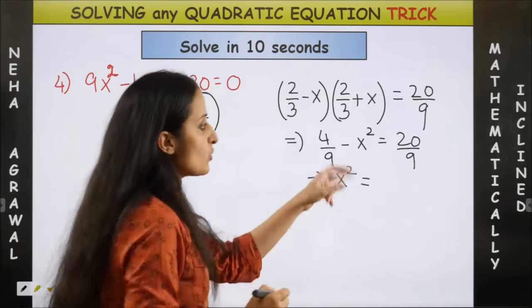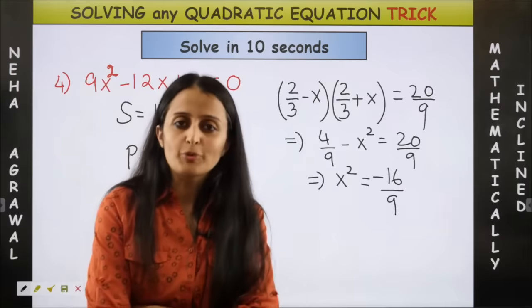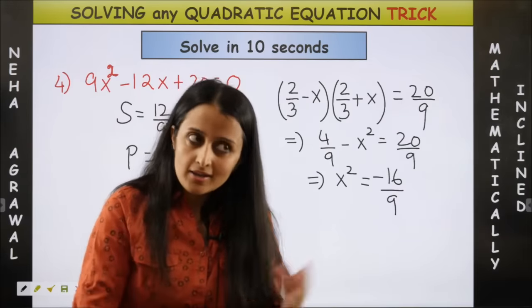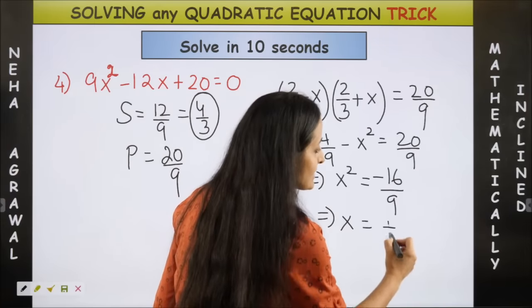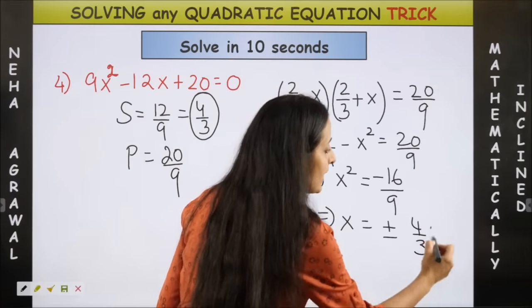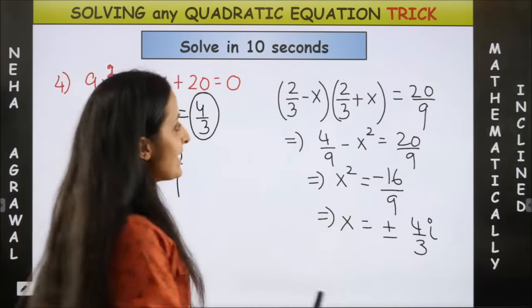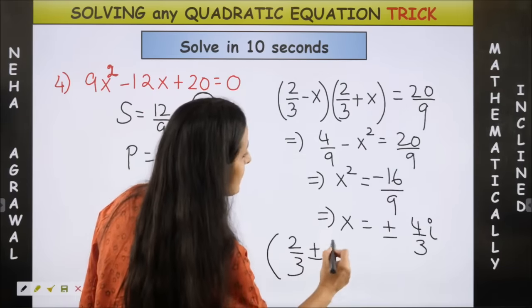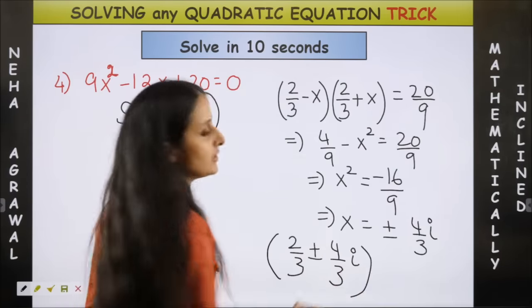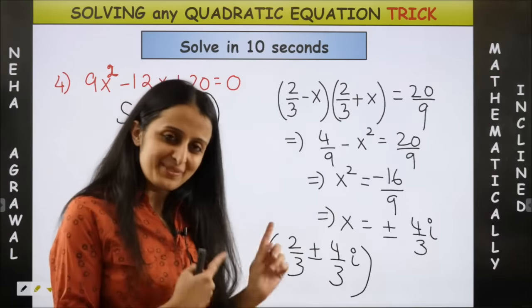So x squared is going to be minus 16 by 9. Hmm this is a problem. No it's not a problem. This is the solution. Because x will be now plus minus 4 by 3 iota. Because square root of a negative number. Yes. So that means my factors are 2 by 3 plus minus 4 by 3 iota. Done. Any quadratic equation. Bye bye.